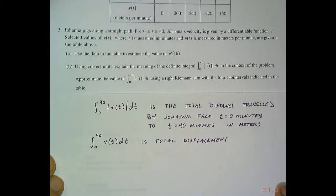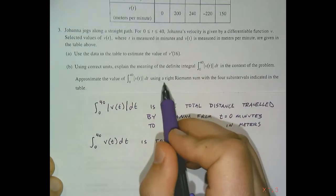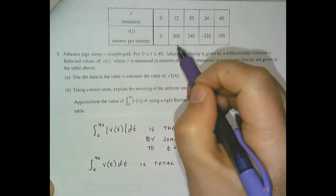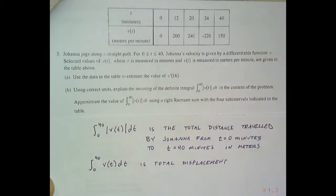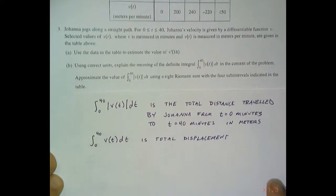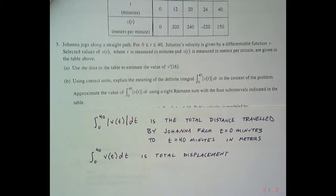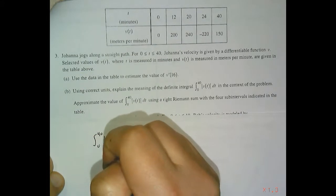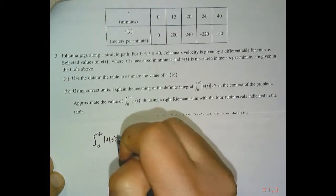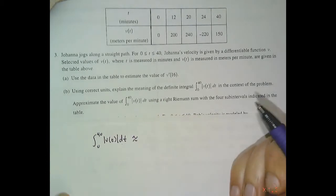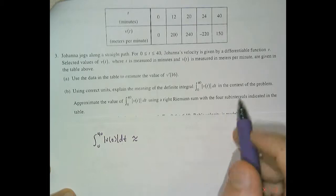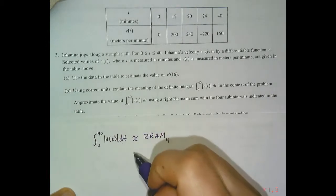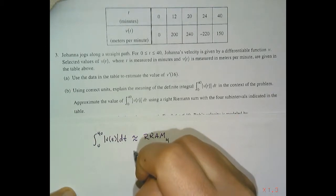Then they want you to actually go through the process of approximating it using a right Riemann sum with four subintervals. So when we look at the table there are one, two, three, four subintervals. So our table supports the idea of four subintervals.